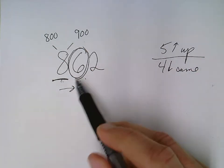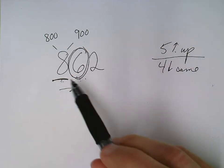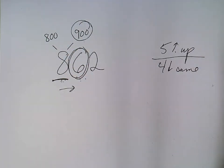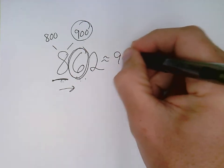And in this case, my circle digit is a 6, which is larger than a 5, so my underlined digit is going to go up. So 862 rounded to the nearest hundred is 900. These are approximately 900.